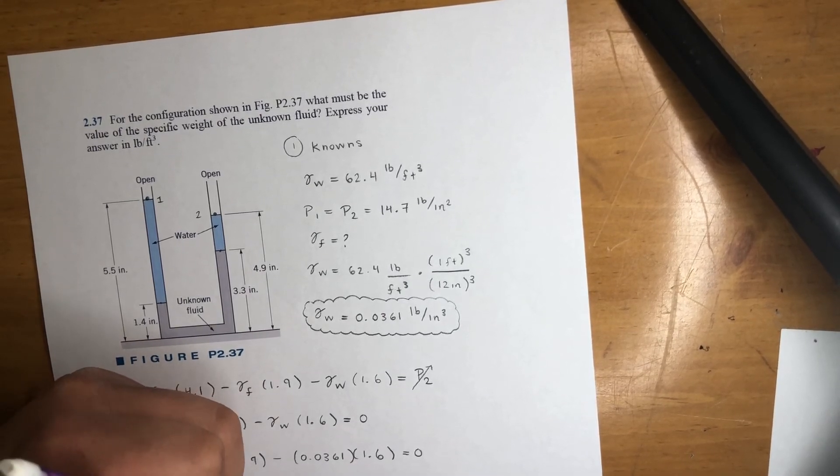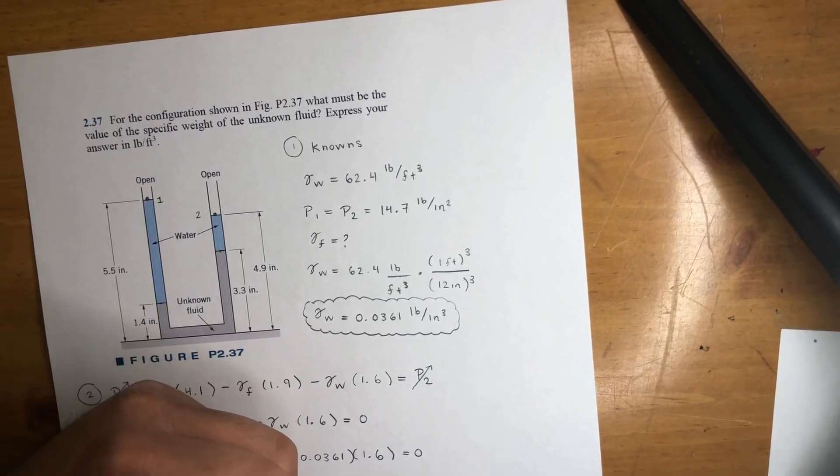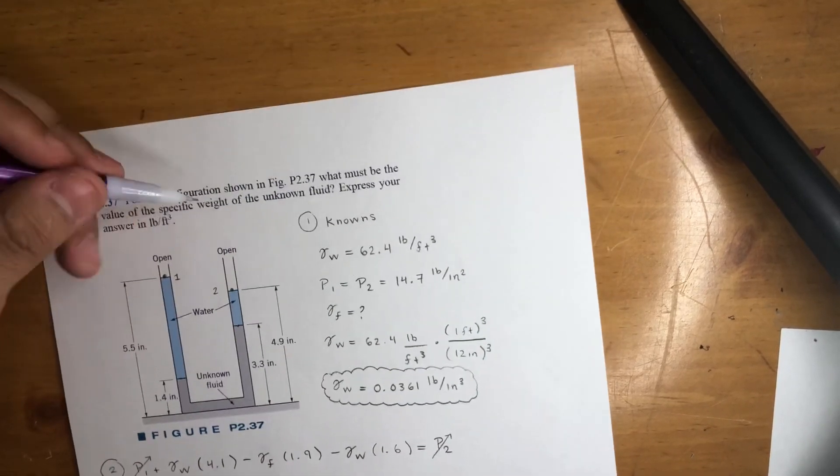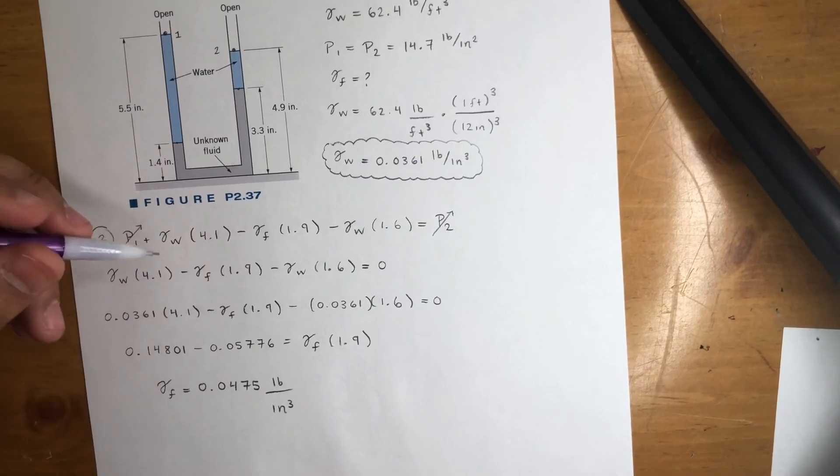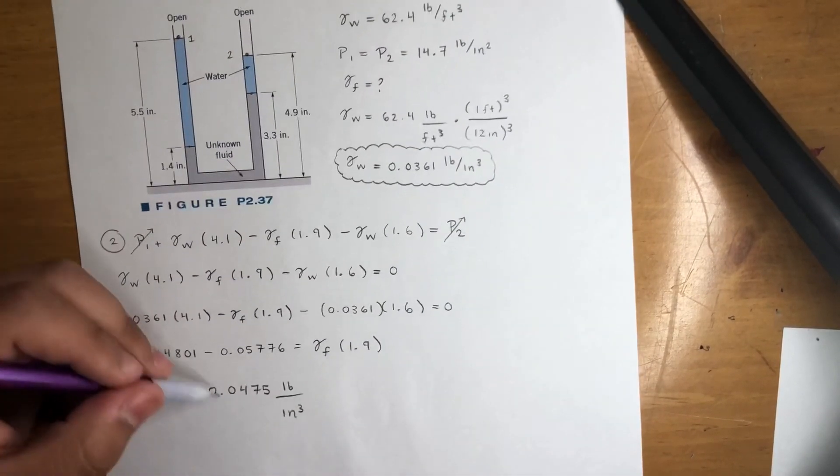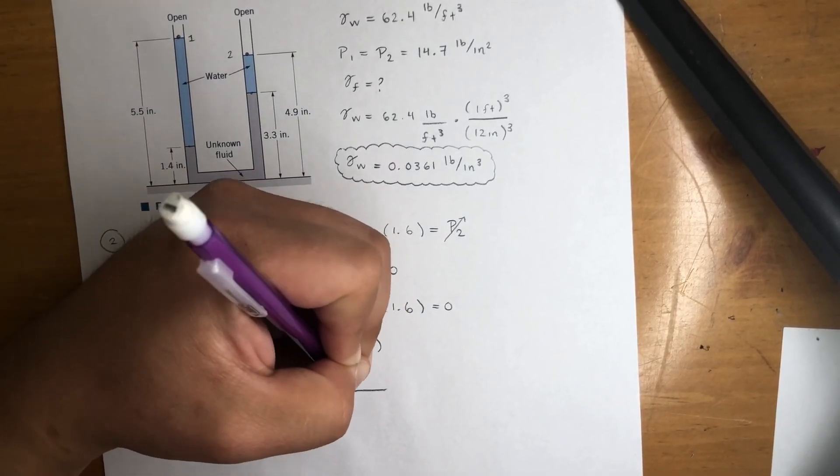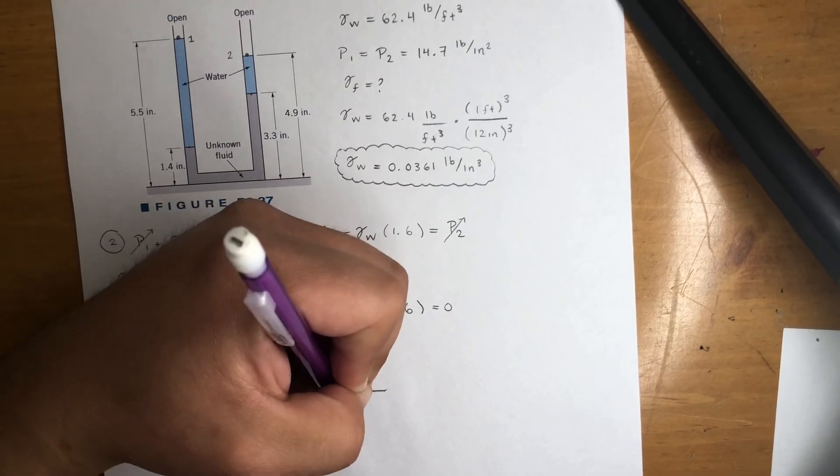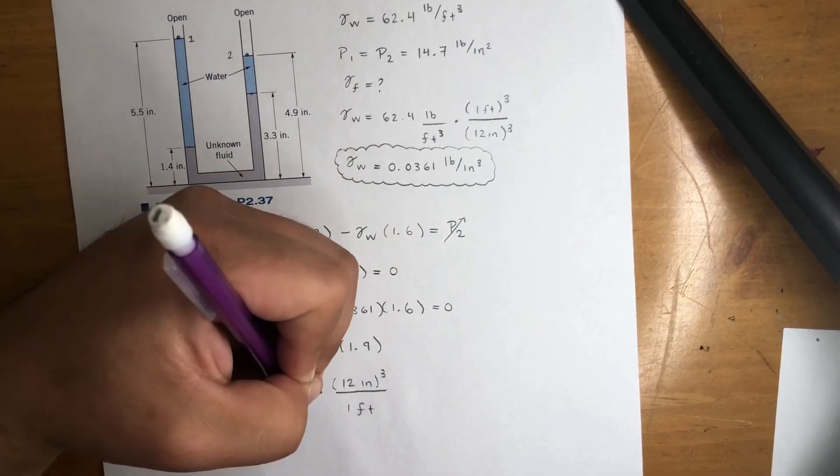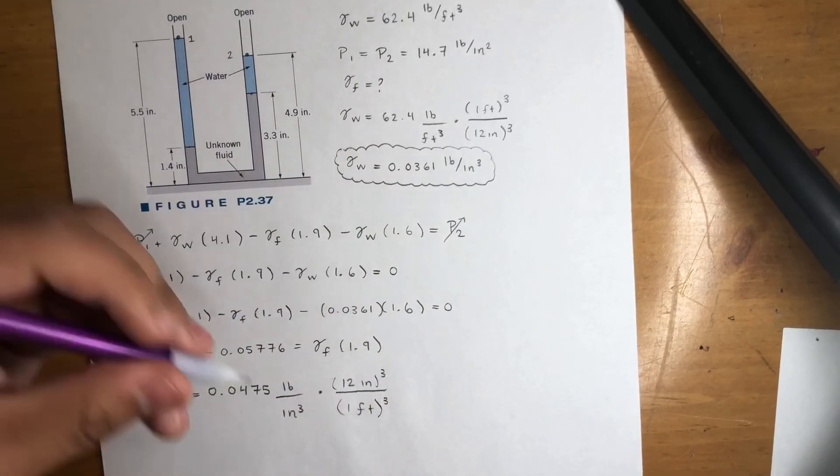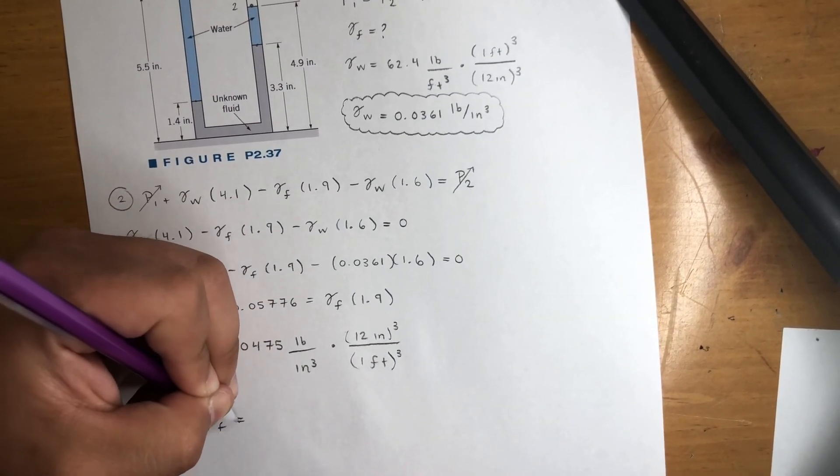Now it is asking for pounds per feet cubed. So sorry, I'm not sure if you could see that, but it was asking for pounds per feet cubed, so we just got to convert this. It's pretty easy now. We just work backwards. We know 12 inches, this time it goes up top because inches at the bottom is equal to one foot cubed. Both of them, because the cube right here. And that should give you gamma f is equal to 82.08 pounds per feet cubed.